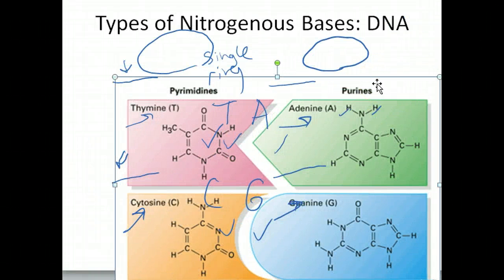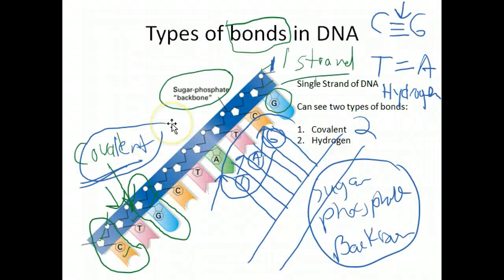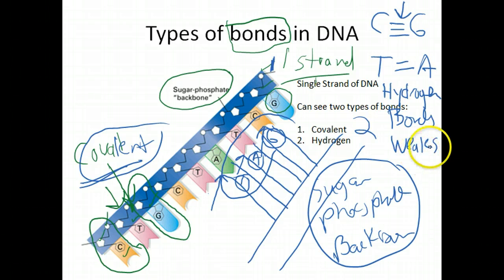They're called hydrogen bonds, and they are a lot weaker than covalent. Covalent are much stronger than hydrogen bonds. I want you to think of weak bonds when you think of hydrogen bonds, and that is so that you can actually separate these two strands in instances like DNA replication, which we'll get to in the next section. Just keep in mind that there are different strengths of bonds holding DNA molecules together.